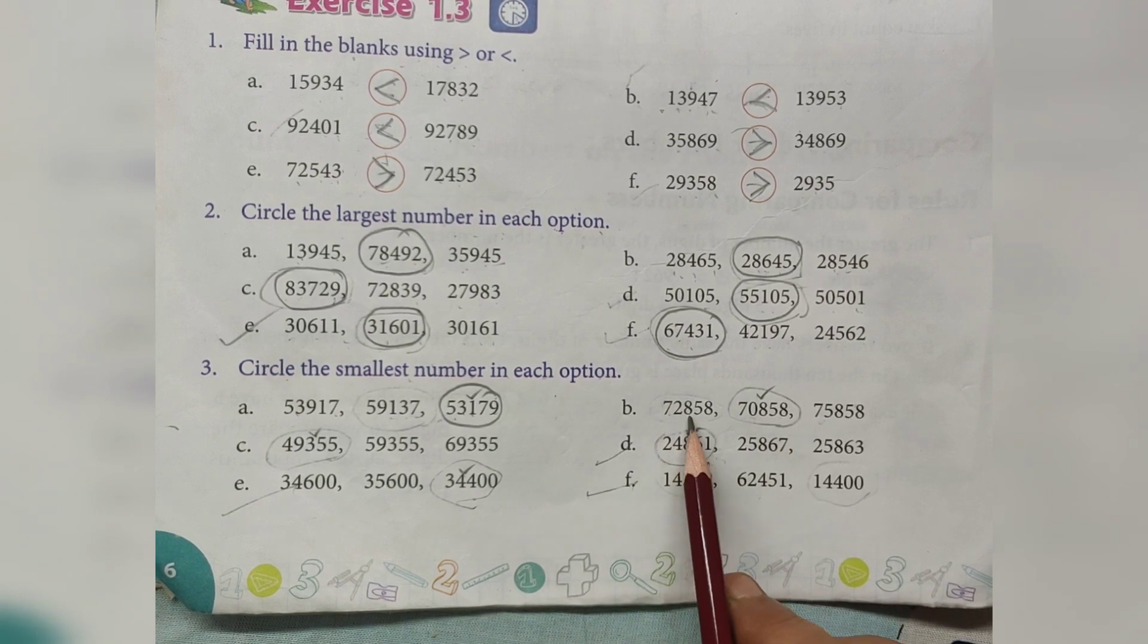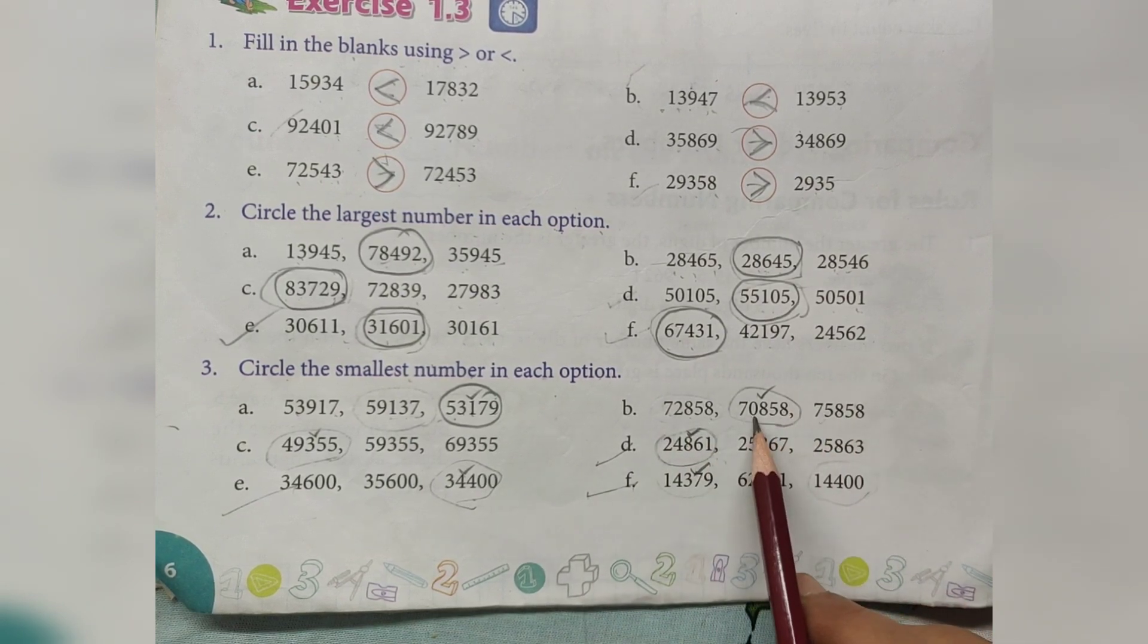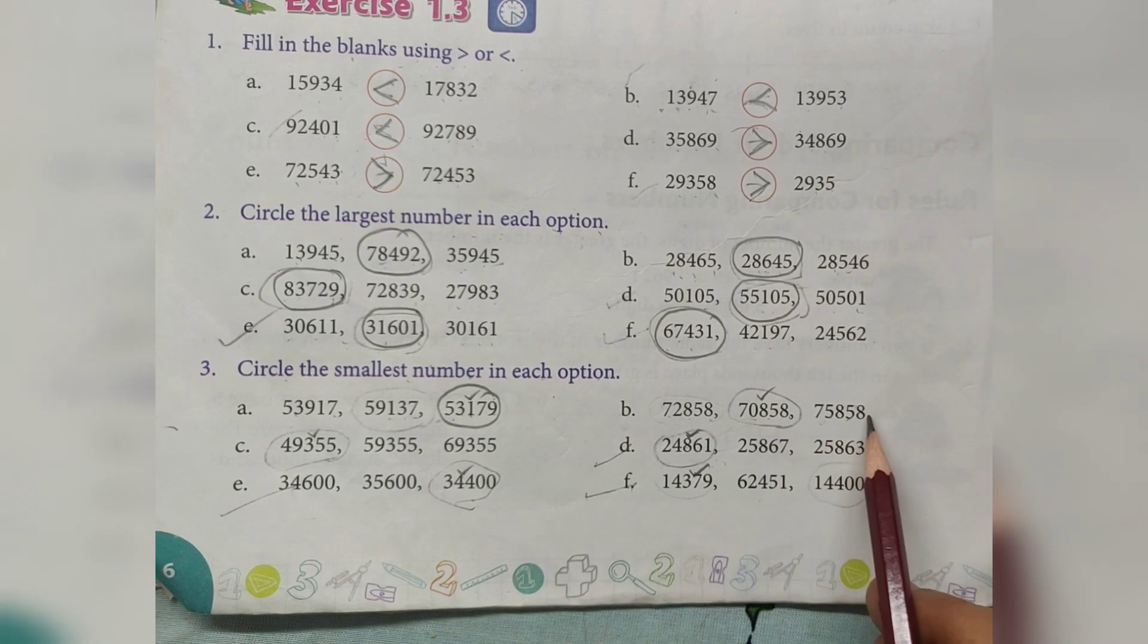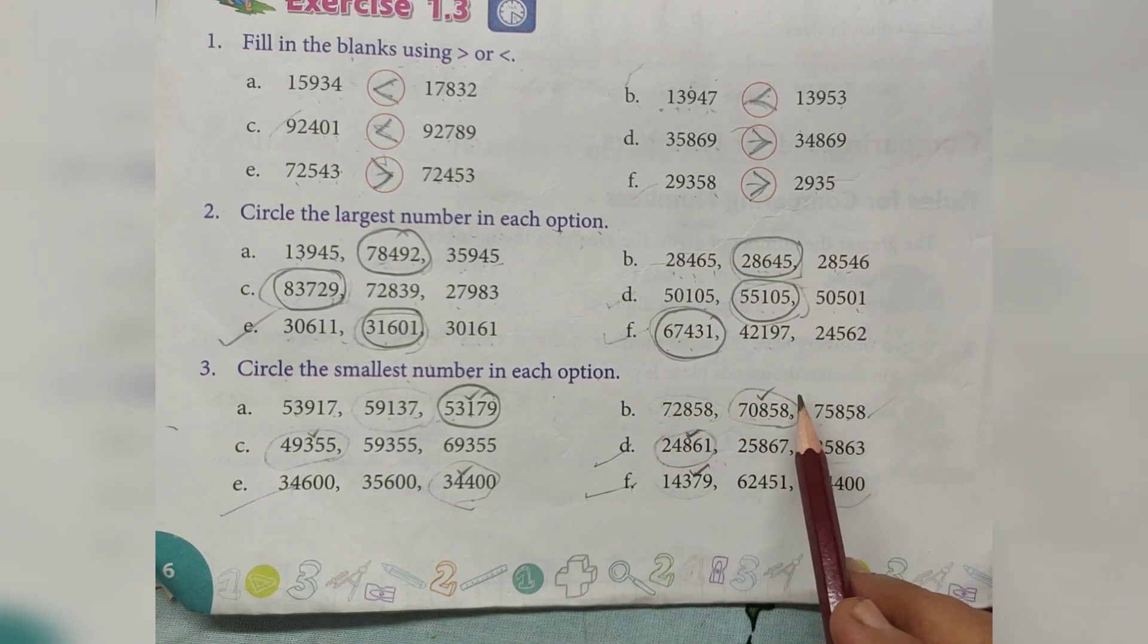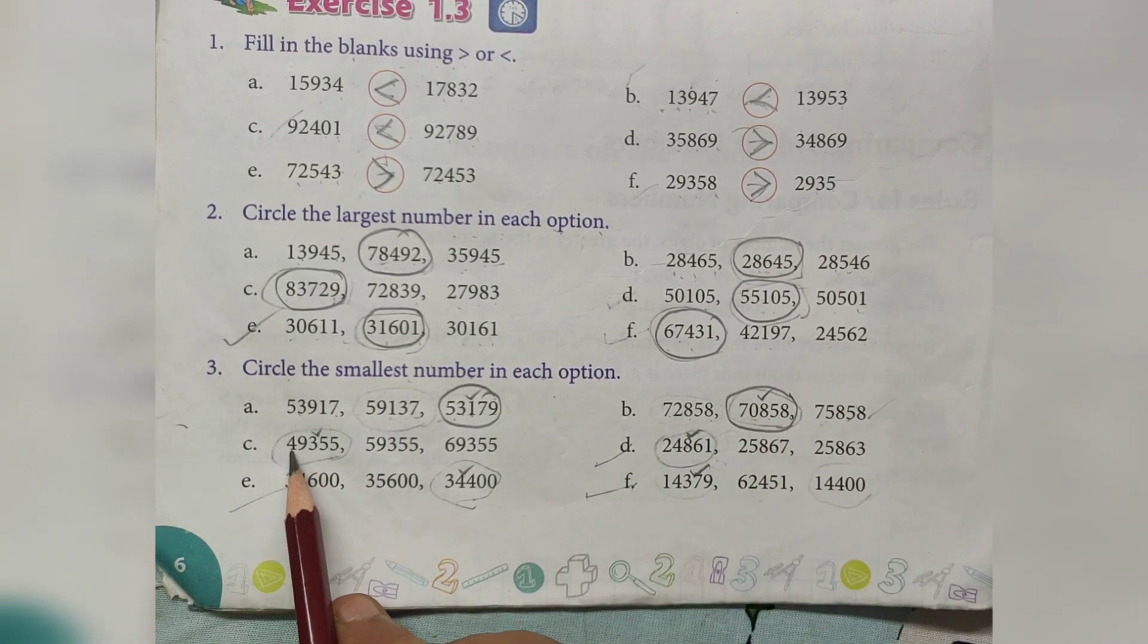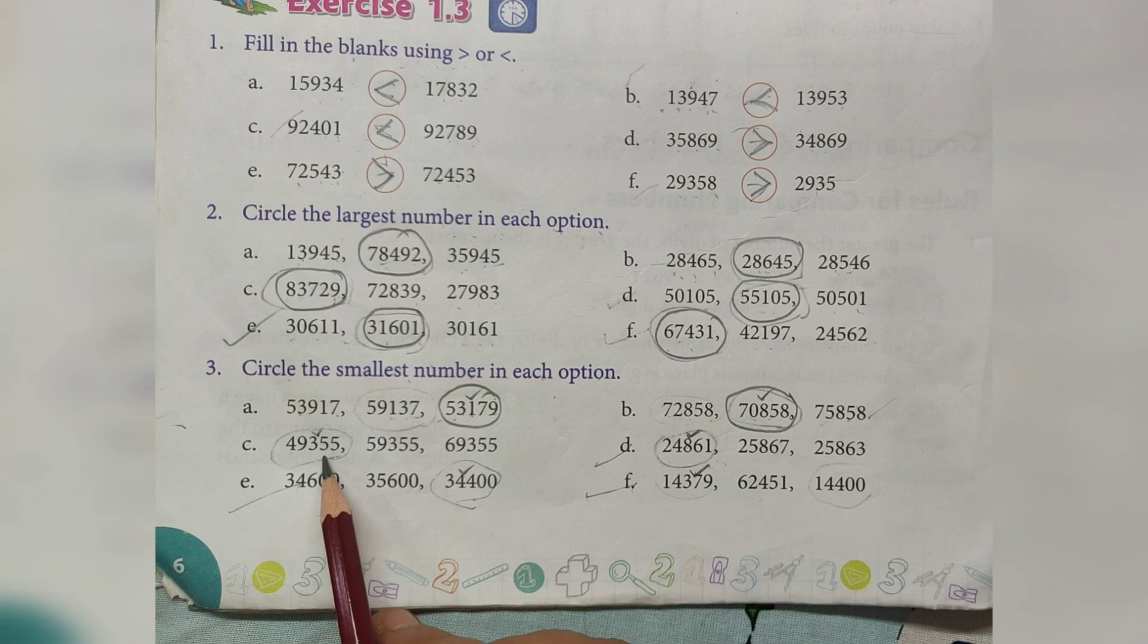72,858, 70,858, 75,858. Which is smallest number? 70,858.